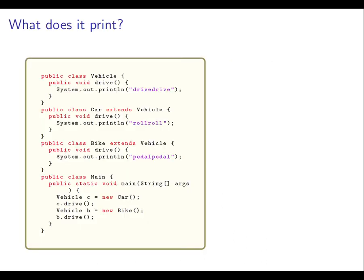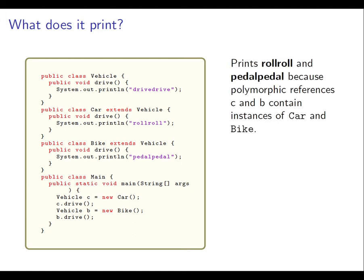Have a look at the code. Once you're sure you know what it prints, then resume the recording and go on. This prints 'Roll Roll' and 'Pedal Pedal' because this works just how you might expect. The references C and B are polymorphic. They contain instances of Car and Bike respectively, and so when you send them the drive message, the appropriate implementation of the drive method is the one implemented.